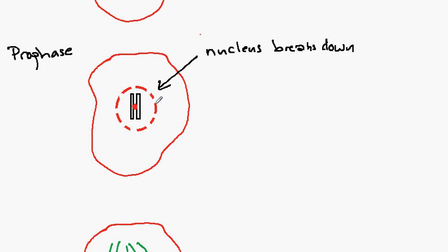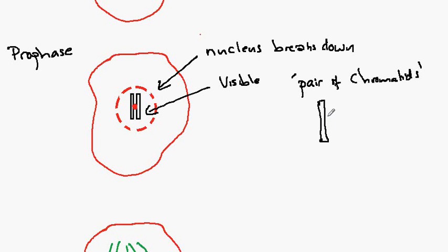The membrane breaks down and the chromosomes become visible. They are visible as a pair of chromatids. Each chromosome has been copied. Here's our original chromosome. During DNA replication it was copied and the copy is held together by the centromere. So this is our pair of chromatids which are visible at the beginning of mitosis in the prophase.